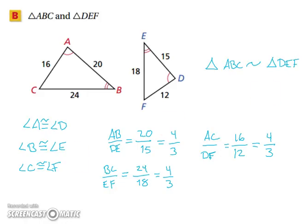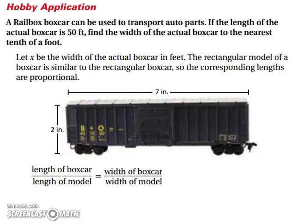Let's look at a real world application. A railbox boxcar can be used to transport auto parts if the length of the actual boxcar is 50 feet. Find the width of the actual boxcar to the nearest tenth of a foot. So, we want to find out the width. Let X be the width of the actual boxcar in feet. The rectangular model of the boxcar is similar to the rectangular boxcar, so the corresponding lengths are proportional. So, we can set it up as length of the boxcar over length of the model equals width of the boxcar over width of the model.